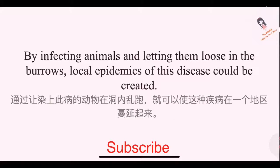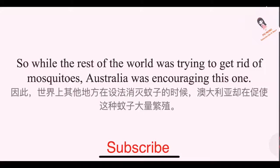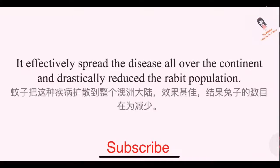By infecting animals and letting them loose in the burrows, local epidemics of this disease could be created. Later it was found that there was a type of mosquito which acted as the carrier of this disease and passed it on to the rabbits. So while the rest of the world was trying to get rid of mosquitoes, Australia was encouraging this one — it effectively spread the disease all over the continent and drastically reduced the rabbit population.